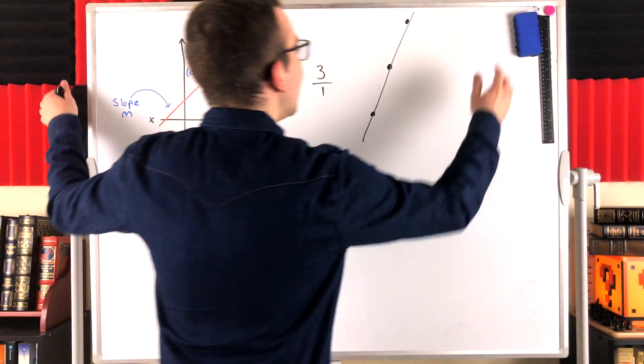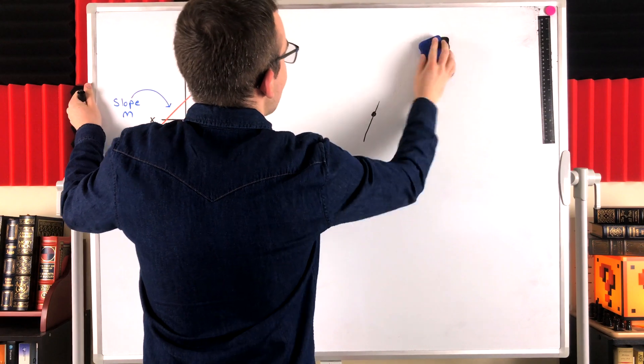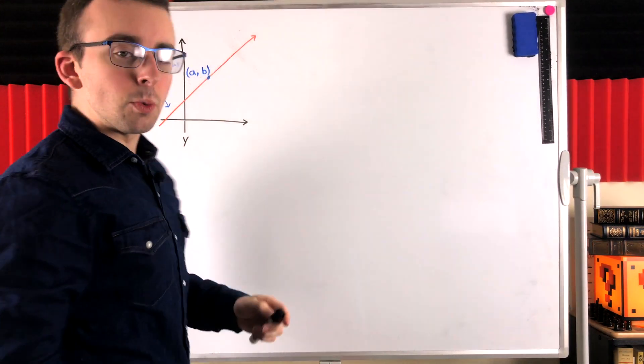So, certainly given a point and the slope, we can draw a line. And so, we should be able to find the equation of the line as well. And indeed, we can.